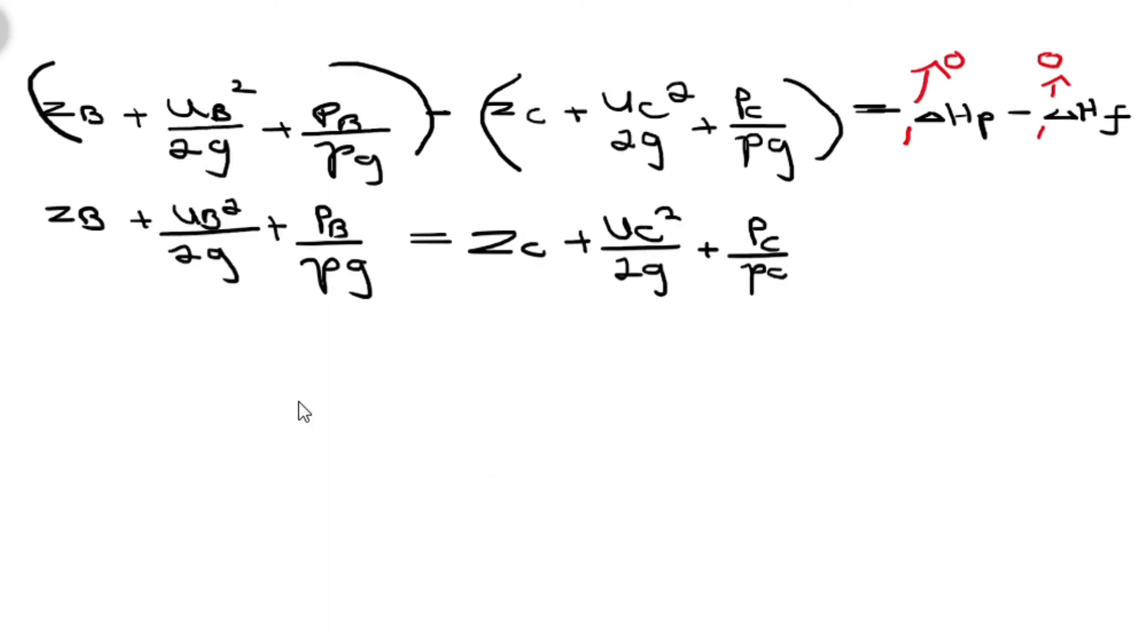We will be left with, we can assume that the speed from point B to C will be constant. We can say the speed at B will equal to the speed at C. Therefore, this will be zero. We can cancel out and this here will be zero because it equals to the speed at which is at B.